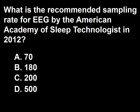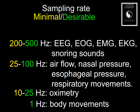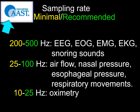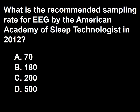Next question: What is the recommended sampling rate for EEG by the American Academy of Sleep Technologists in 2012? A, 70; B, 180; C, 200; D, 500. The recommendations by the American Academy of Sleep Technologists are similar to those of the Sleep Medicine Academy, except that the word 'desirable' has been changed to 'recommended.' So the answer to this question is D, 500.